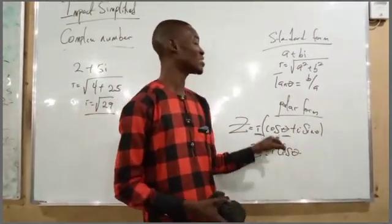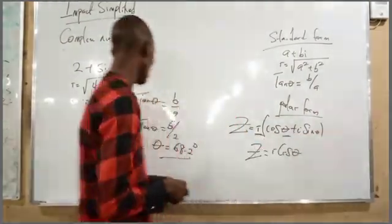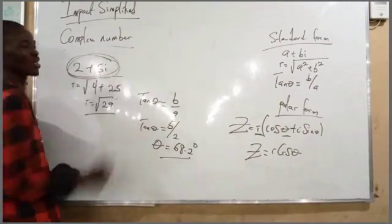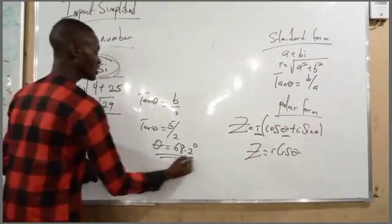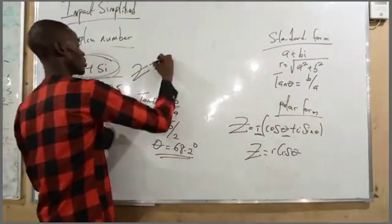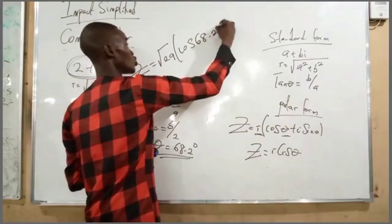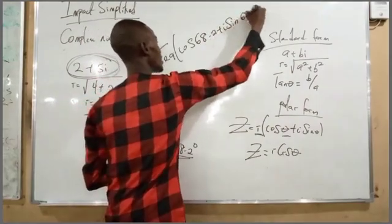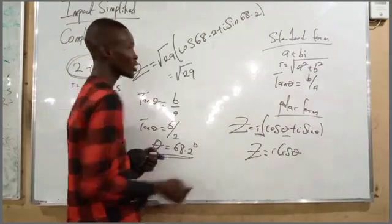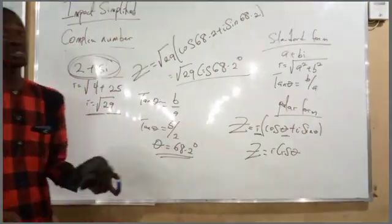Z can also be written as R∠θ, which means the same as R(cos θ + i sin θ). Going back to our example with 2 + 5i, since we found R equals the square root of 29 and θ equals 68.2 degrees, the polar form is Z equals square root of 29 times (cos 68.2 plus i sin 68.2), or equivalently square root of 29 ∠ 68.2 degrees.